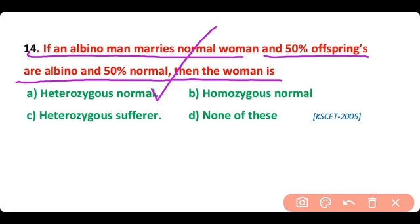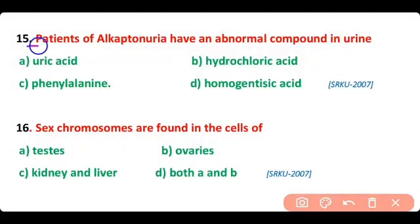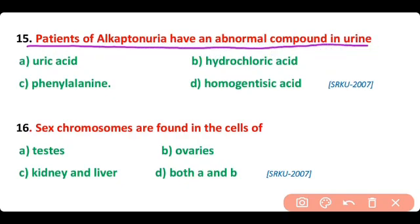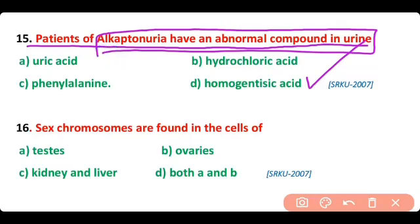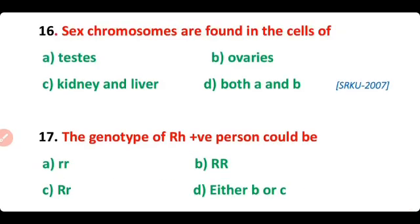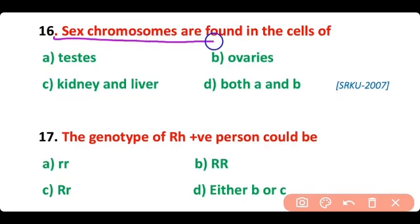If 50% of offspring are normal and 50% are albino, the woman is heterozygous normal. Question number 15. The patients of alkaptonuria have an abnormal compound in the urine known as homogentisic acid. Correct answer is option D. In alkaptonuria, homogentisic acid is present in the urine, giving it a yellowing color.